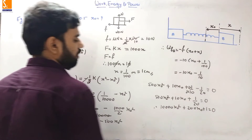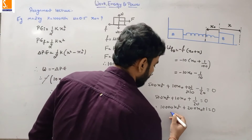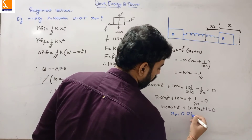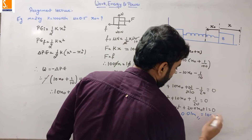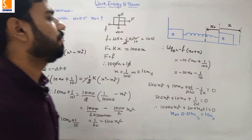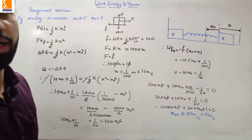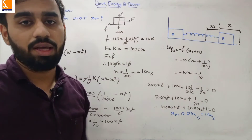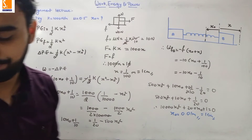Solving the quadratic equation, we get x₀ = 0.01 m, which is 1 centimeter. So the minimum initial compression of the spring is 1 cm, at which block A just breaks contact with the wall when released. Please copy down this question, then we'll move to the next one.